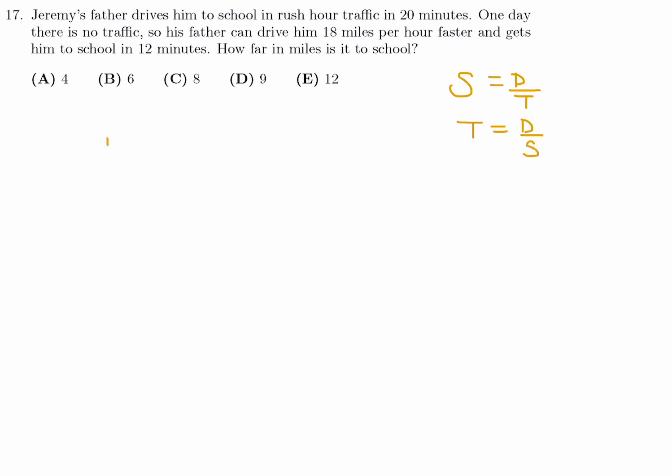So in rush hour, the time is equal to distance over speed, so therefore the time is 20 minutes. I'll put that in hours, since they're talking in miles per hour. So that's 20 over 60, which is a third. One third of an hour. And distance we don't know, and the speed we don't know. Now, when it's not rush hour, when there's no traffic, the time, this time is 12 minutes, so 12 over 60 is 1 over 5. And the distance, again, I don't know, but they're saying the speed now is the speed plus 18.